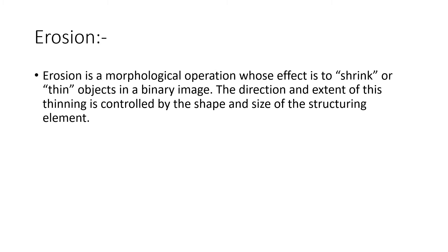Erosion is a morphological operation whose effect is to shrink or thin objects in a binary image. The direction and extent of this thinning is controlled by the shape and size of the structuring element. If you change the shape — for example, using a square, diamond, or disk structuring element — or change the size, such as using a 3×3 versus a 5×5 square structuring element, you will get different results.